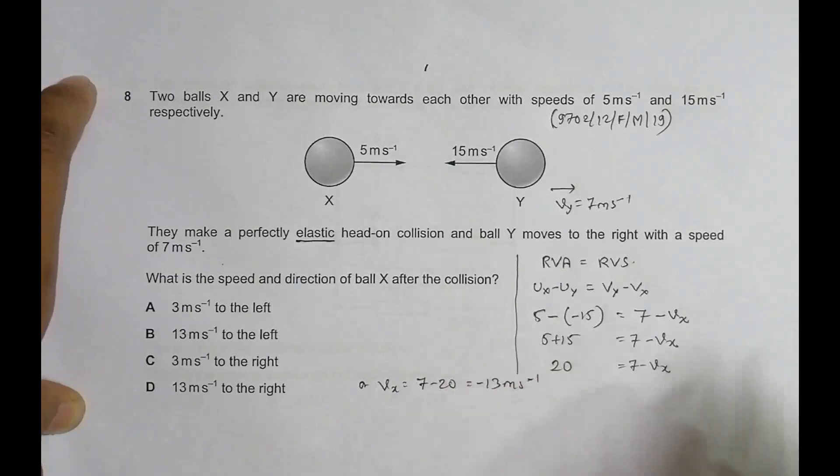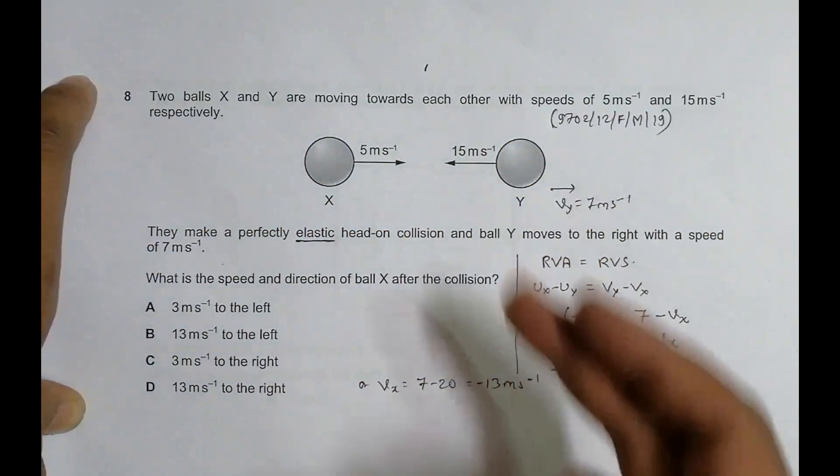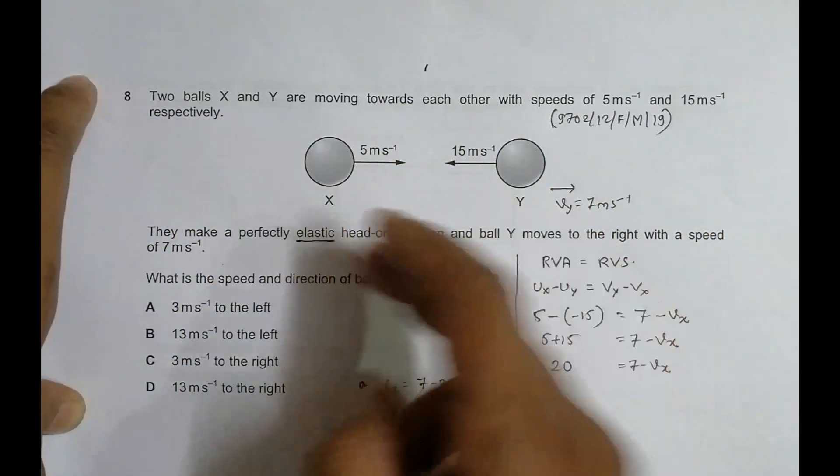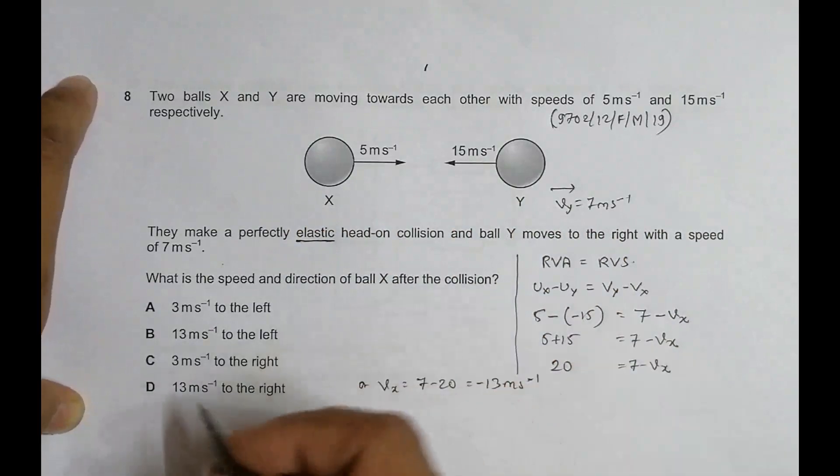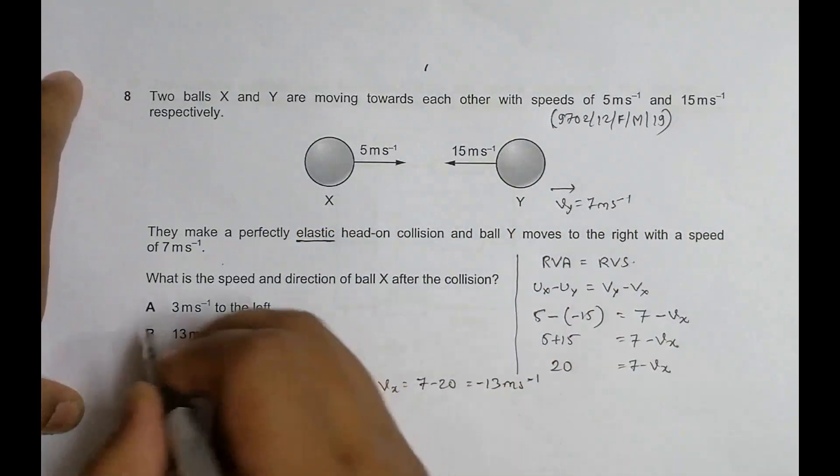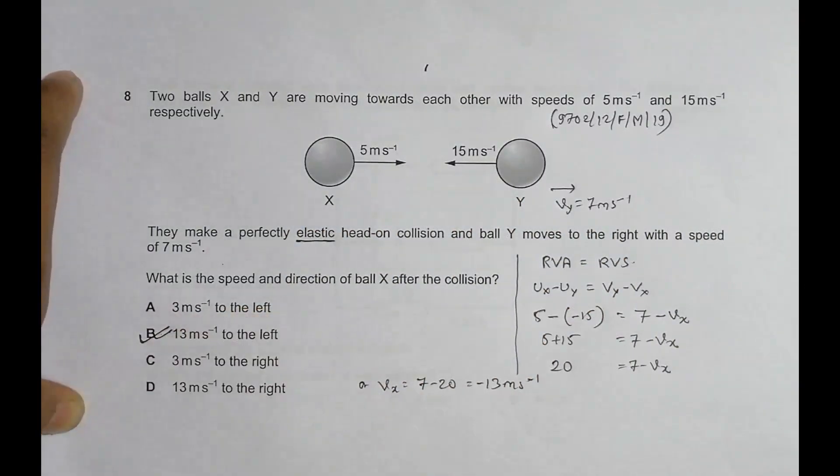Now since positive is in the right direction, this negative means the left direction. So the body is going at 13 meters per second to the left. Looking at the answer choices, choice B seems to be the correct answer. The correct choice is B.